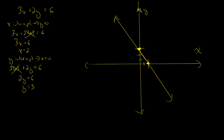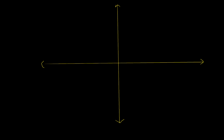Another concept that comes with the idea of lines is how quickly a line changes. This is called slope. Slope is the change in the y-direction divided by the change in the x-direction. If I have two points, it's y2 minus y1 divided by x2 minus x1 — how much it rises over how much it runs.